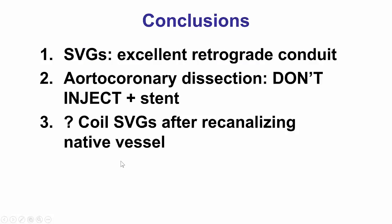The patient had resolution of his symptoms and an excellent recovery. In summary, this case shows that vein grafts are an excellent retrograde conduit, together with septal collaterals, and this is the best way to start learning the retrograde approach. The aortocoronary dissection is an uncommon complication, but if it happens, the key component is to not inject anymore, stent the ostium, and ensure there is no propagation of the dissection further into the aorta.